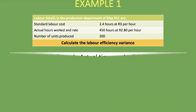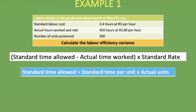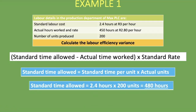Applying the formula — Standard Time Allowed minus Actual Time Worked times Standard Rate. The standard time per unit is 2.4 hours. We multiply that by the actual units produced, which is 200, giving us: 2.4 × 200 = 480 hours. So we expected to use 480 hours to produce the 200 units. That is our standard time allowed.